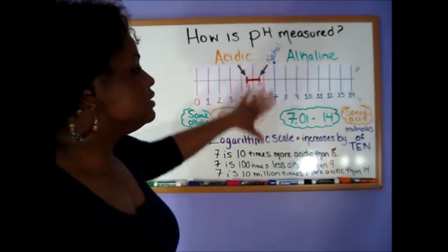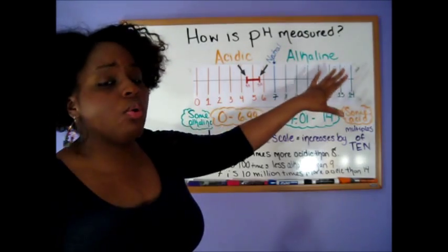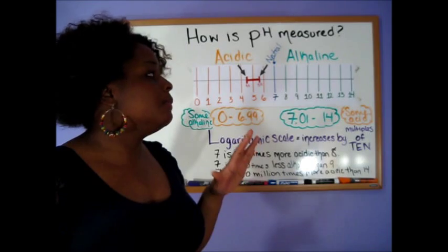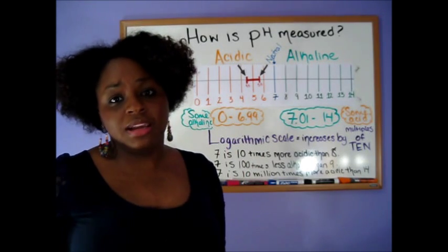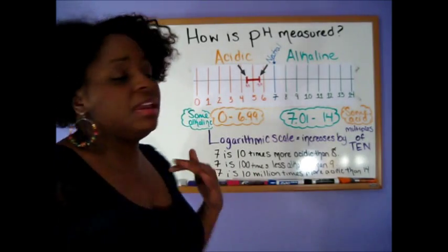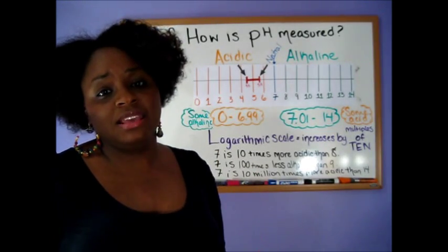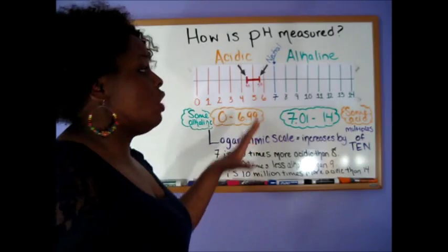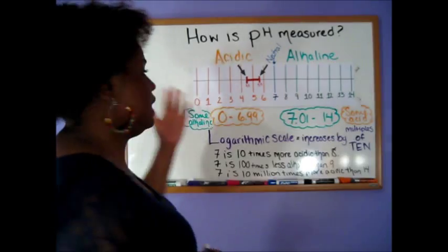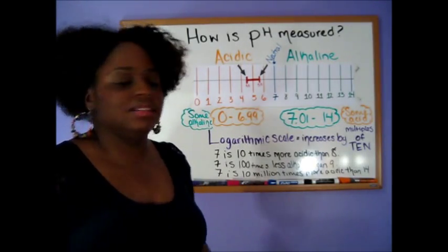Now the higher you go on the alkaline side of the scale, the more alkaline it gets, the stronger alkaline it gets basically, and it also involves some acid. So even the strongest alkaline has some acid involved, just like I said with the acid.